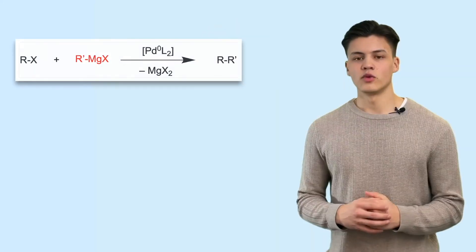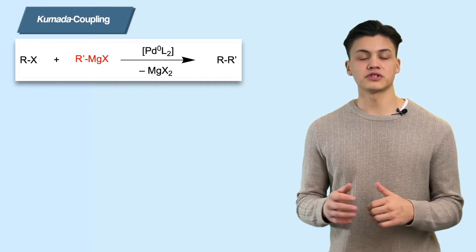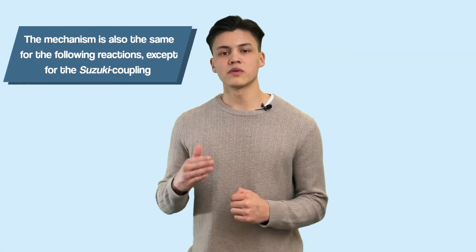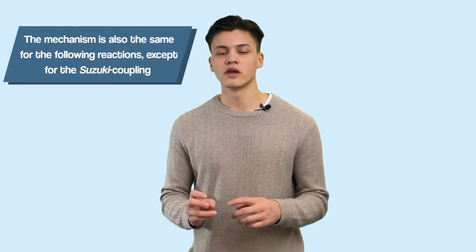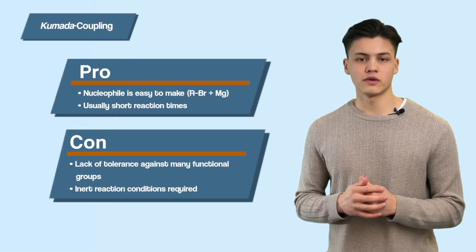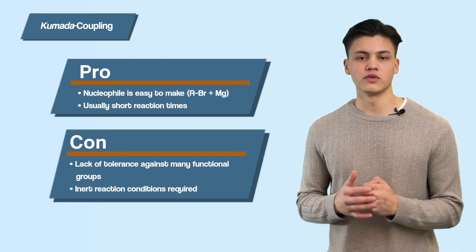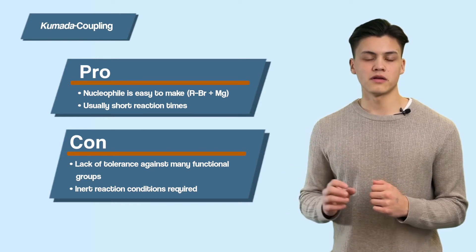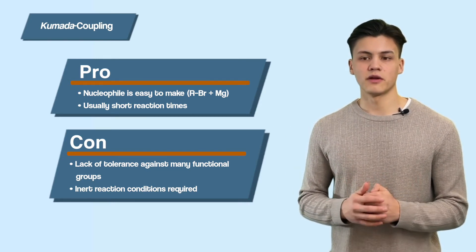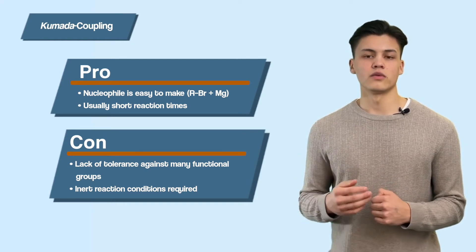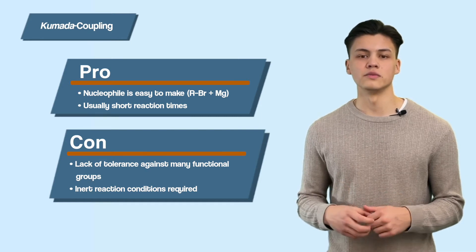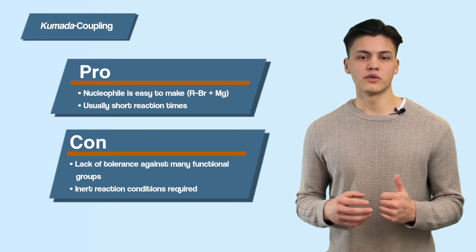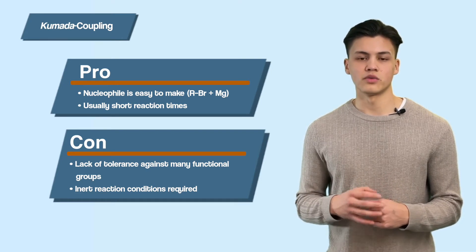Now let's talk about some specific cross-coupling reactions. Starting with the Kumada cross-coupling reaction — which we've basically been discussing all along, since the reaction I showed uses a Grignard reagent as nucleophile. All reactions we'll discuss only differ in the nucleophile used; we always use an aryl halide. The Kumada coupling is simple because Grignard reagents are easy to make, but it lacks tolerance of functional groups. If a coupling partner has an aldehyde group, the Grignard reagent will add to it instead. You must also work under inert conditions because Grignard reagents are sensitive to hydrolysis from air moisture.